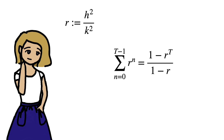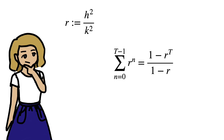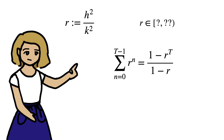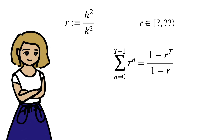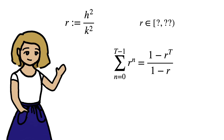The main drawback to this proof, though, is that we've only proven the identity for r within a pretty small interval. What I'm actually going to do is leave finding this interval as a problem for you guys, if you're interested. Feel free to leave your answers in the comments, and I'll see you next time.